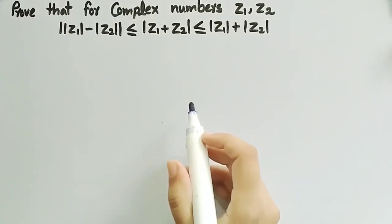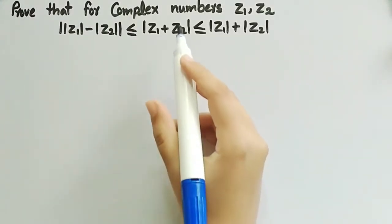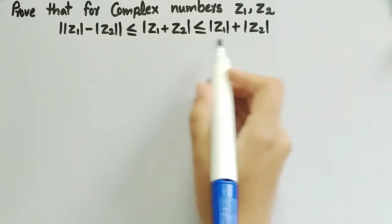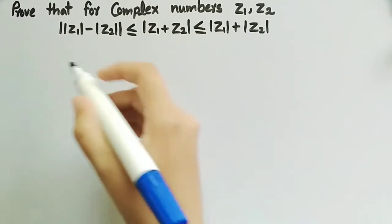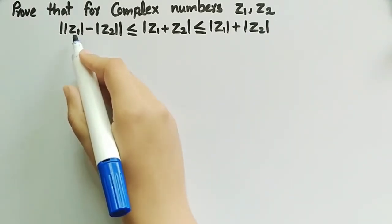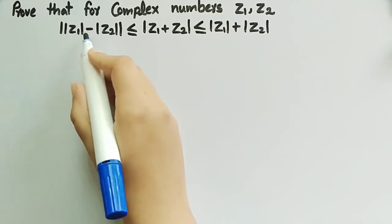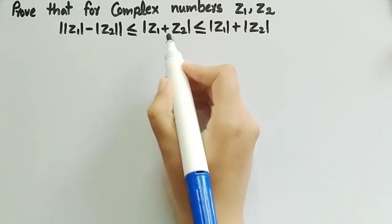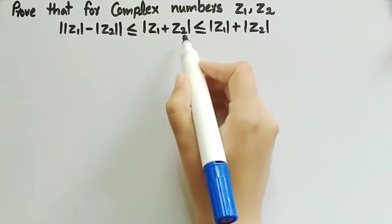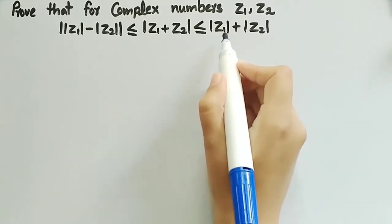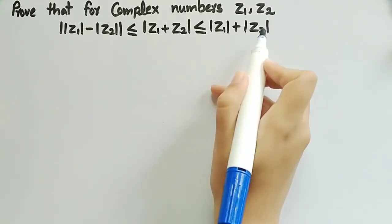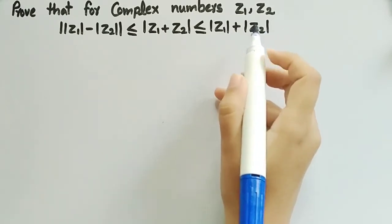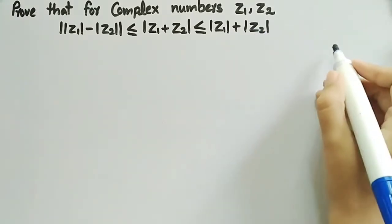In this video we will prove that for complex numbers z1 and z2, the following property holds: the absolute value of mod of z1 minus mod of z2 is less than or equal to mod of z1 plus z2, which is less than or equal to mod of z1 plus mod of z2.